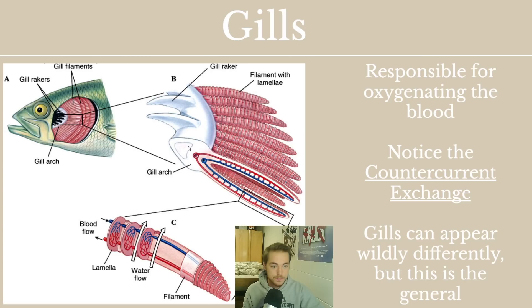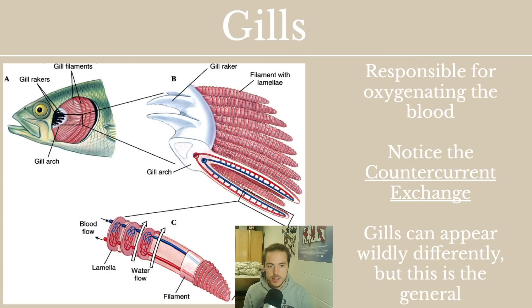Let's talk about the gills. The gills are responsible for oxygenating the blood. Gills in fish are sort of like lungs in that they serve the same purpose: getting oxygen into the bloodstream so the body can use it. But gills do it very differently because fish are taking oxygen out of water, whereas humans take oxygen out of air. The most important thing to notice is counter-current exchange, which is unique to fish and makes diffusion of oxygen from the water to the gills very, very efficient.